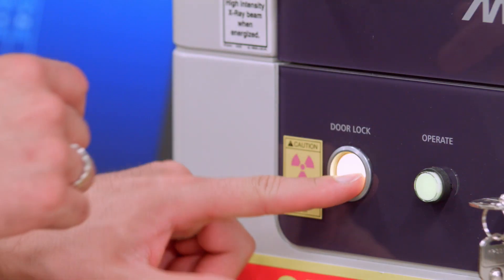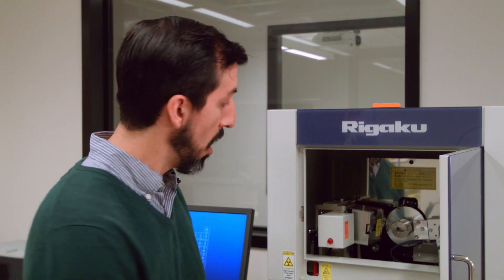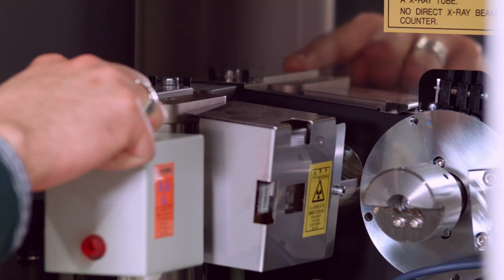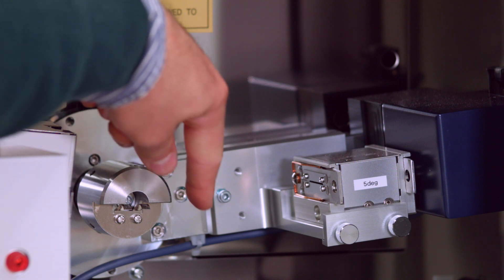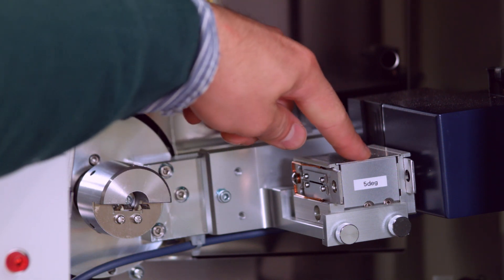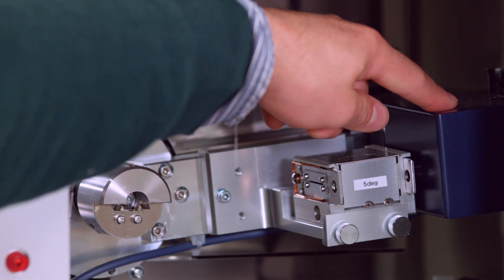Now let's take a closer look at the diffractometer. We have a sealed copper tube for our x-ray source. The x-rays pass through an incident slit, reflect off the sample, travel through the receiving optics, and then are recorded by the x-ray detector.